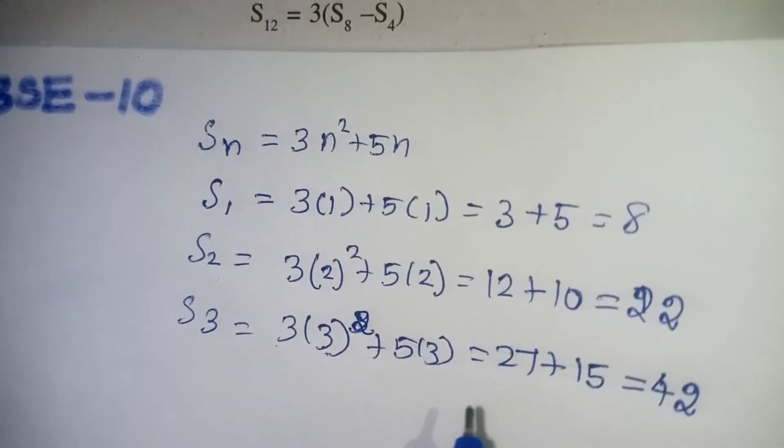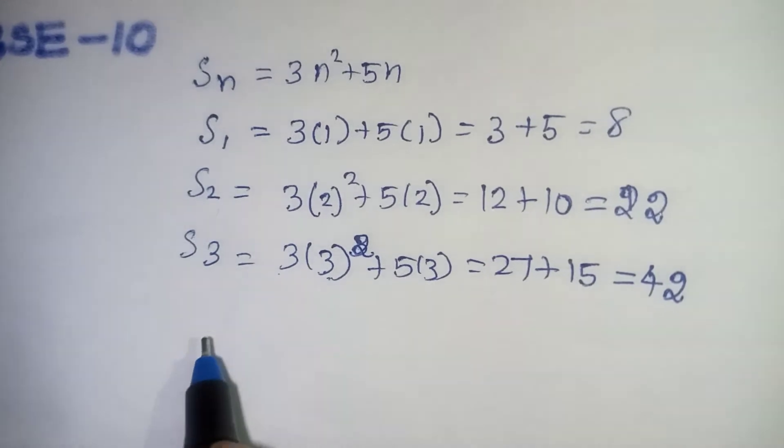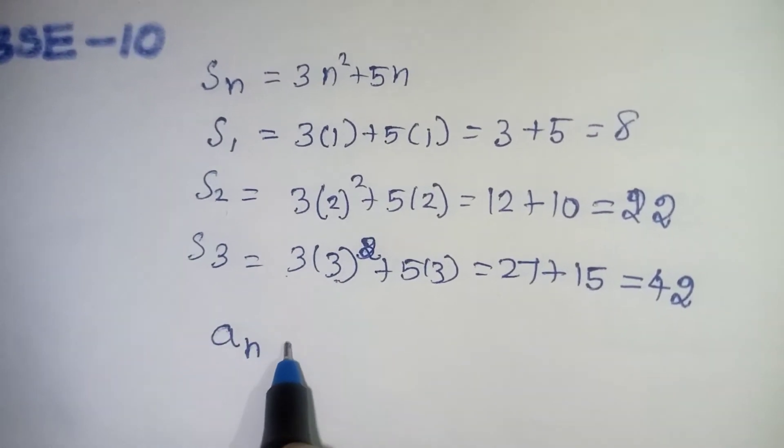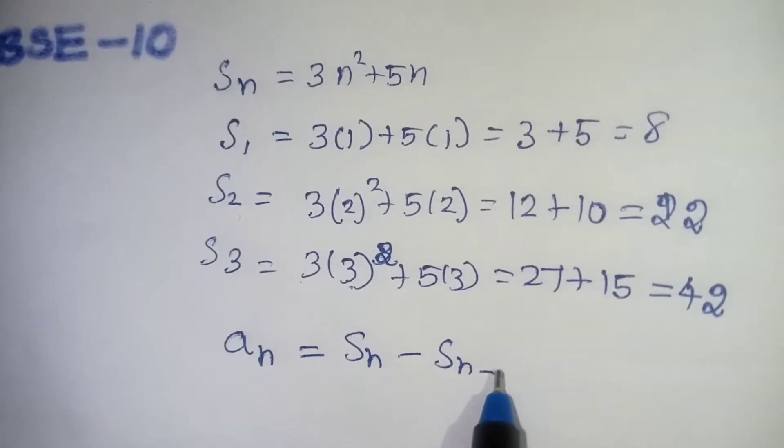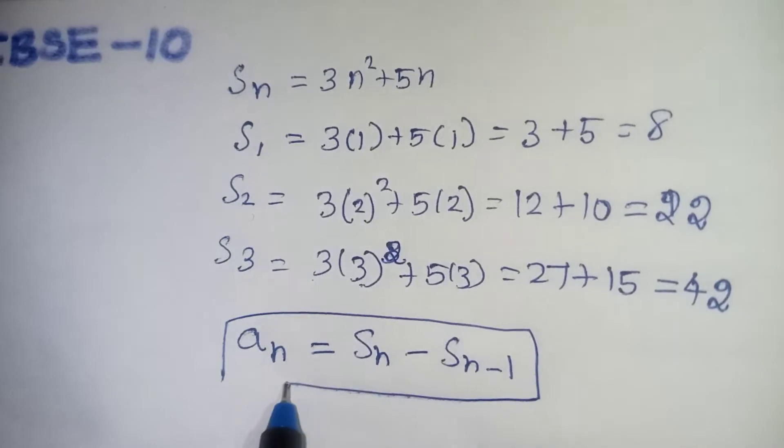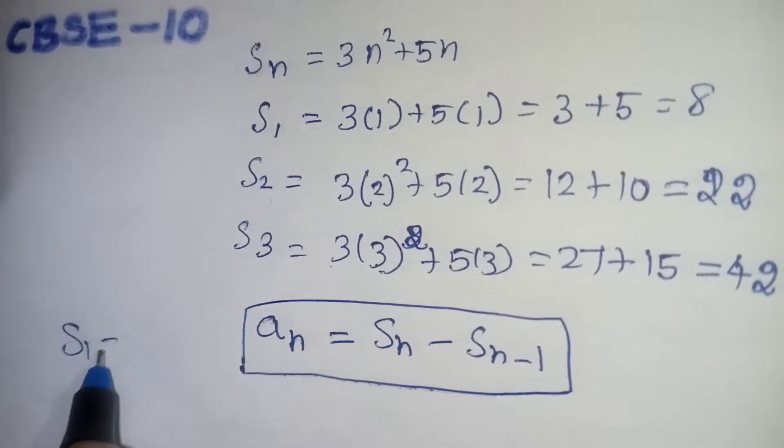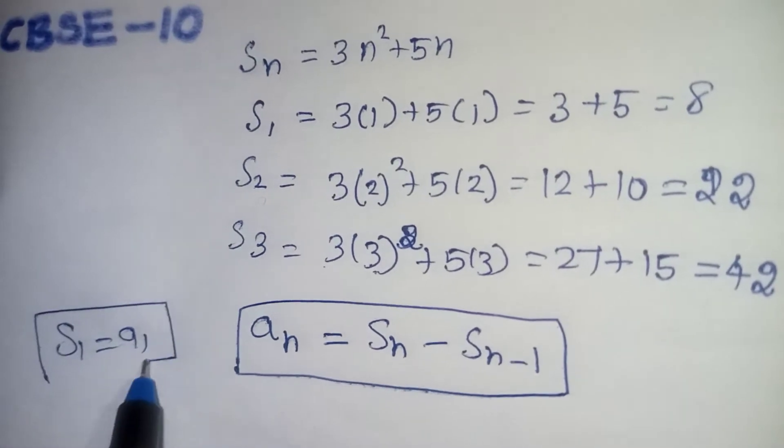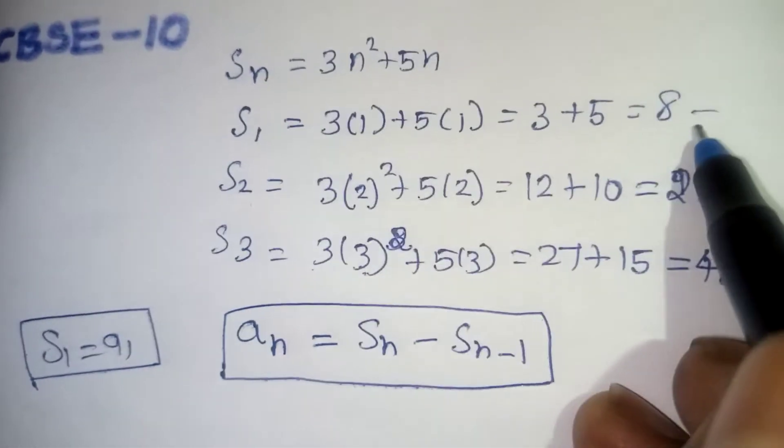But this is not an AP. From this we are going to find out what is A1, A2, A3. The formula for AN in terms of SN is SN minus SN minus 1, and this is a formula for finding AN from SN. Very simple. First we must know that S1 and A1 both are same. So S1 value will be taken as it is A1.